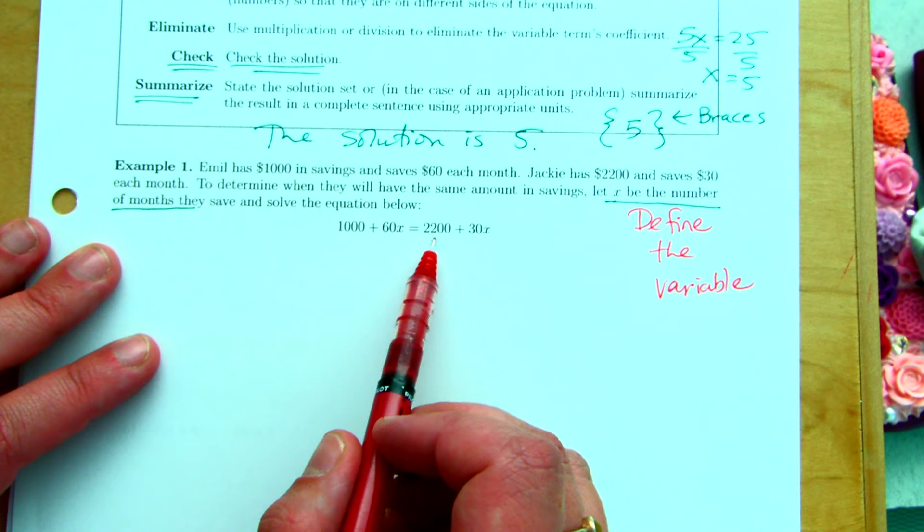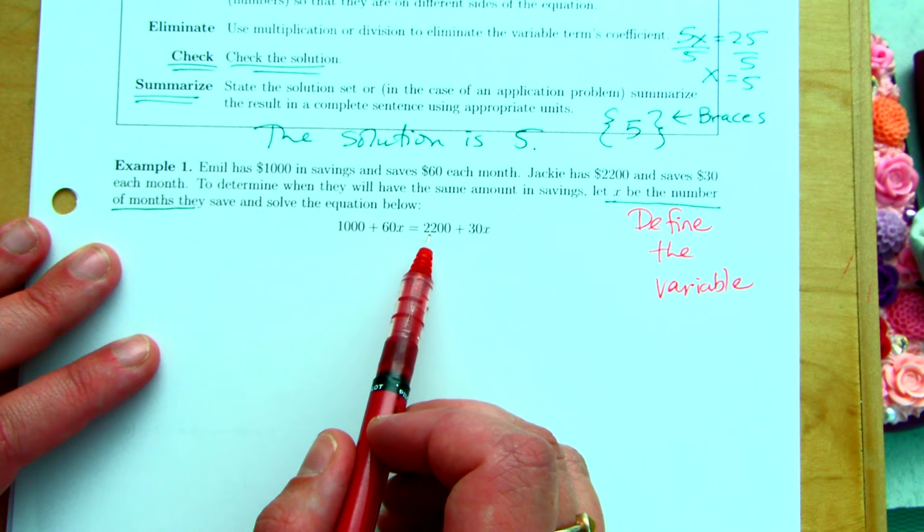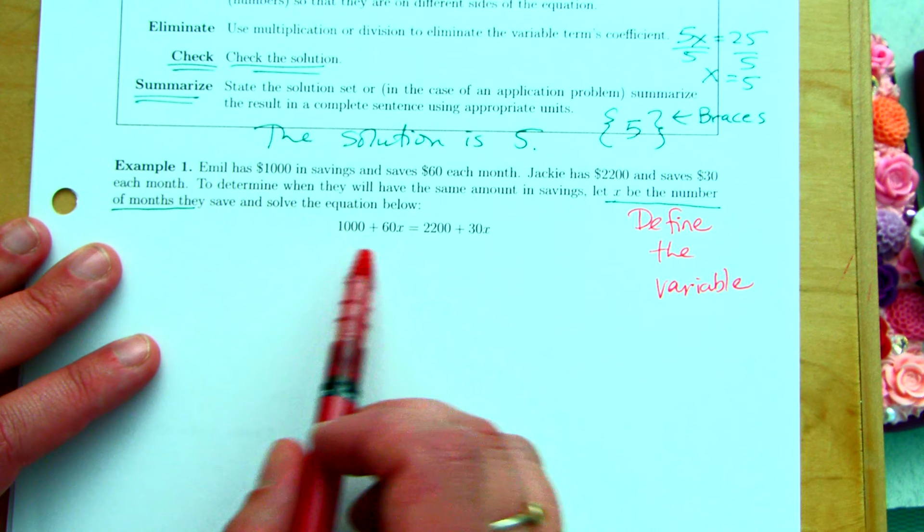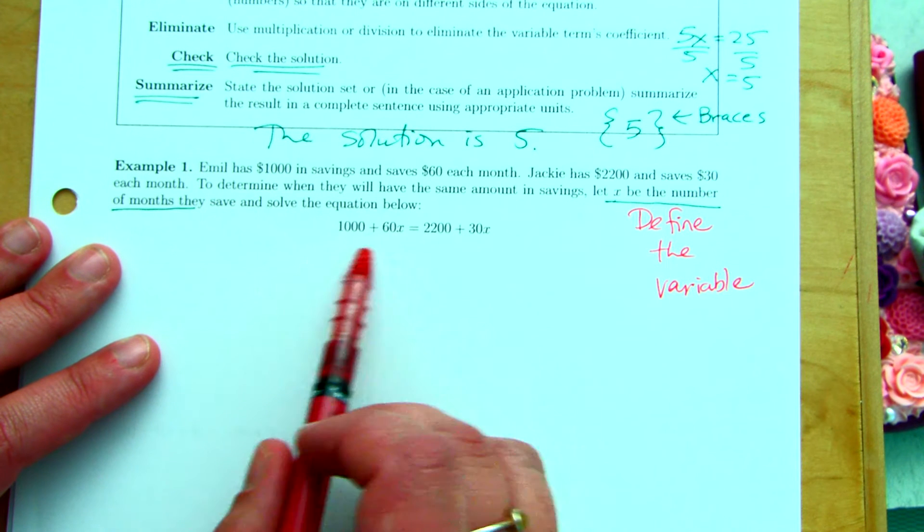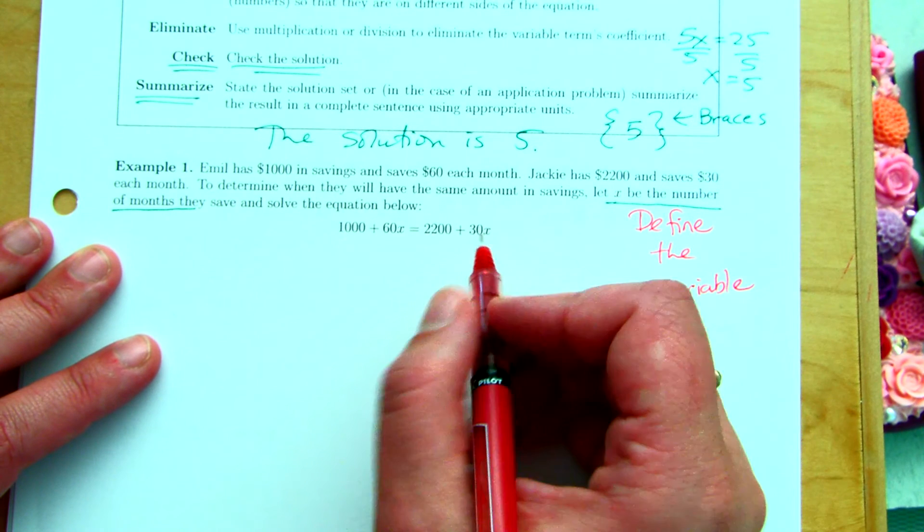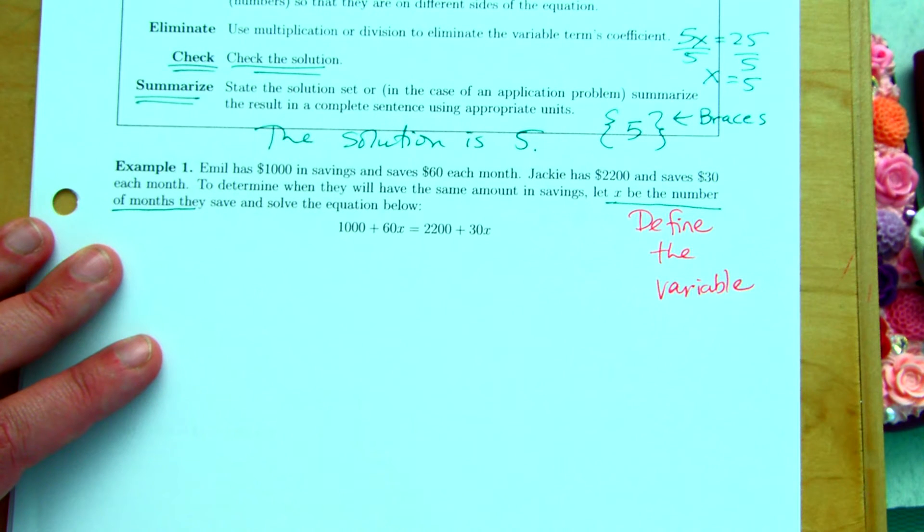Even though the other girl, Jackie, she started with more money, but she's saving less money per month, right? So, eventually, Emile will catch up. So, what are we going to do to solve this?